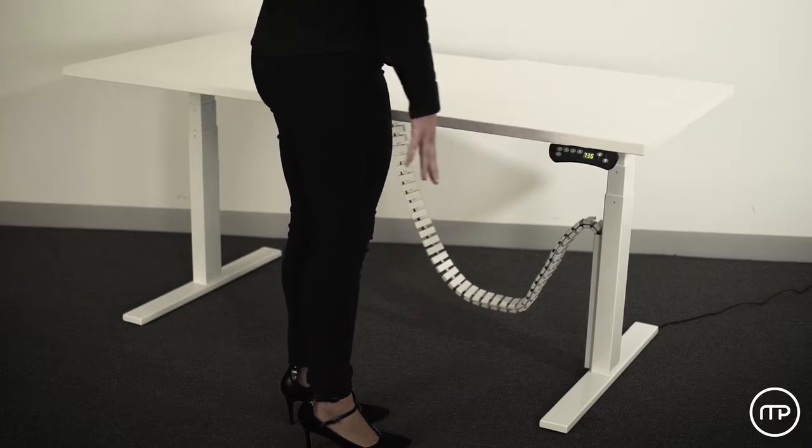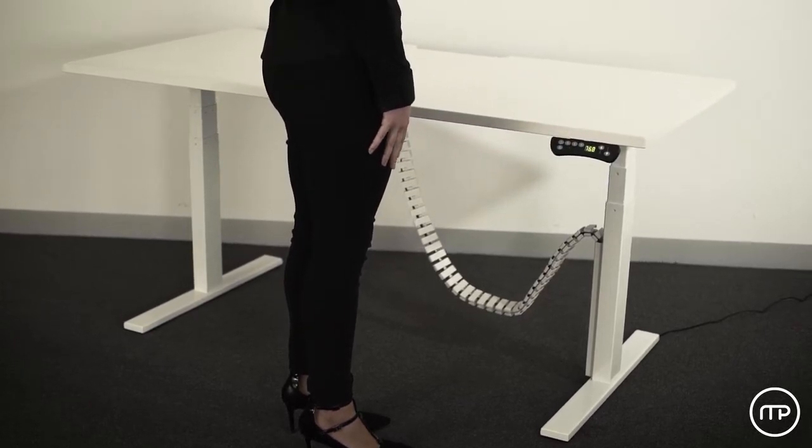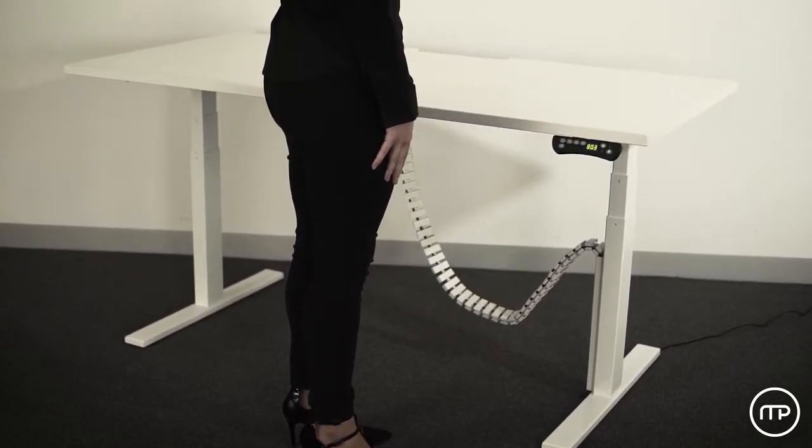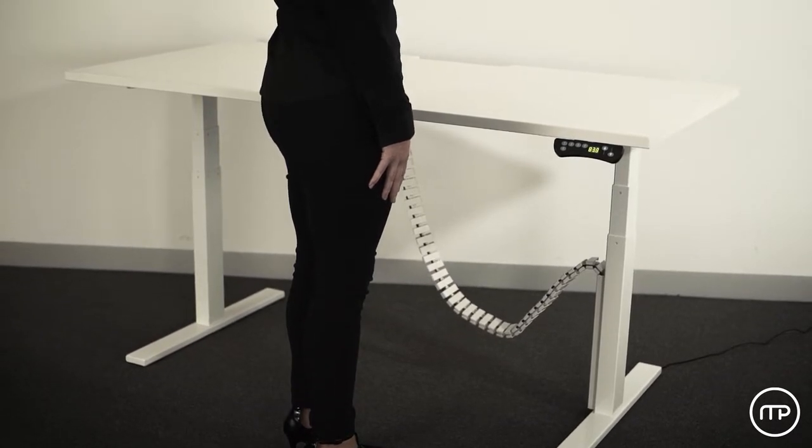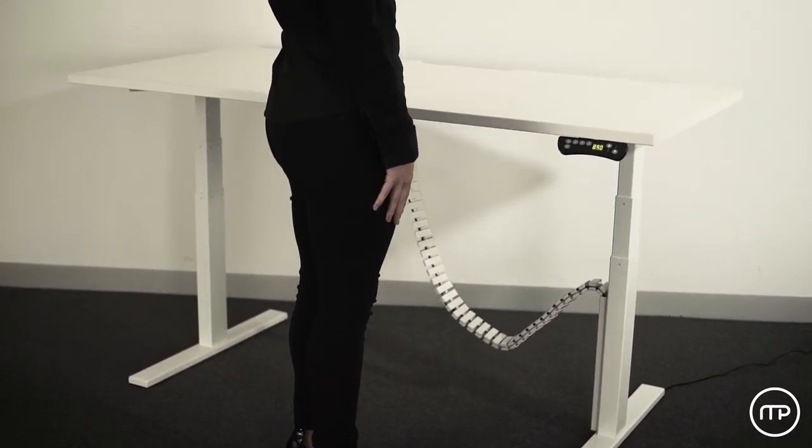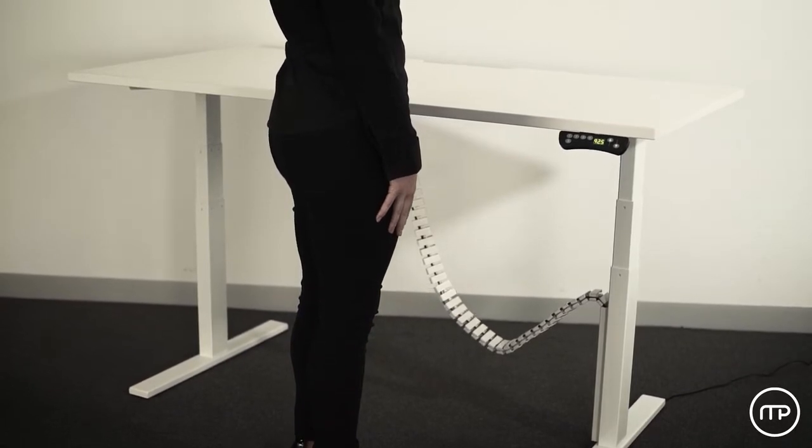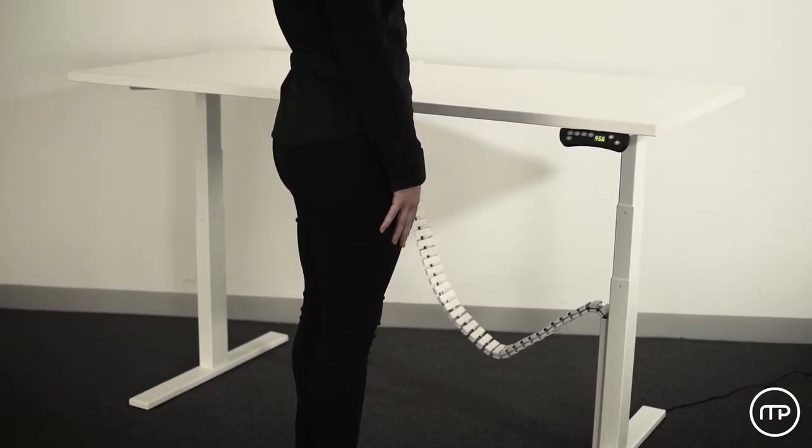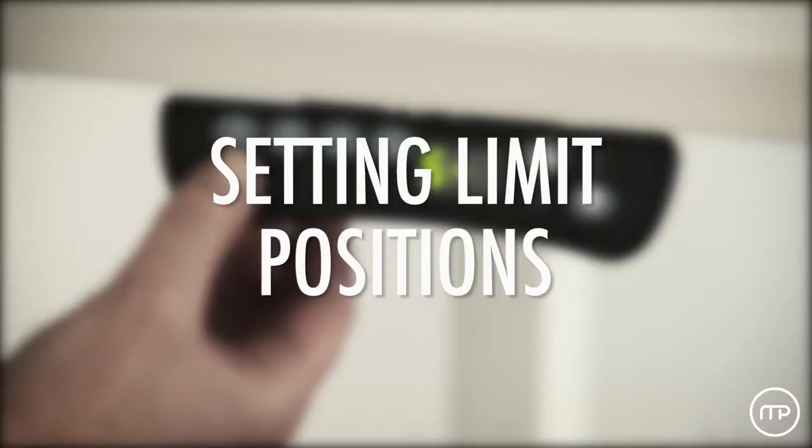Once stored, to adjust the desk to the preset height, simply press the respective numbered button where your preset was saved and the worktop will automatically adjust to the stored height. While the workstation is automatically adjusting, you can stop it at any time by simply pressing any button on the handset.